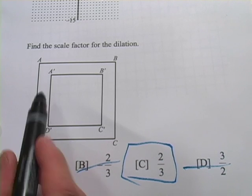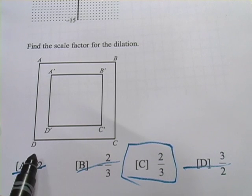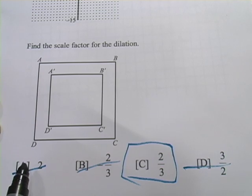And when I look at this A prime, B prime, C prime, D prime, it does seem to be about 2/3 the size of our original square here, so it looks like it makes sense.